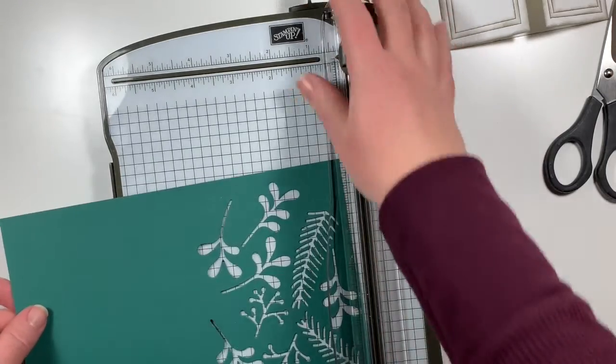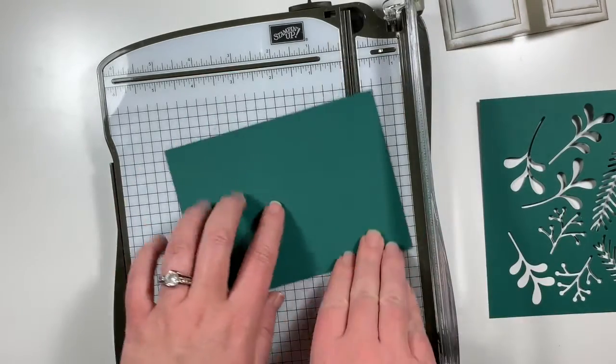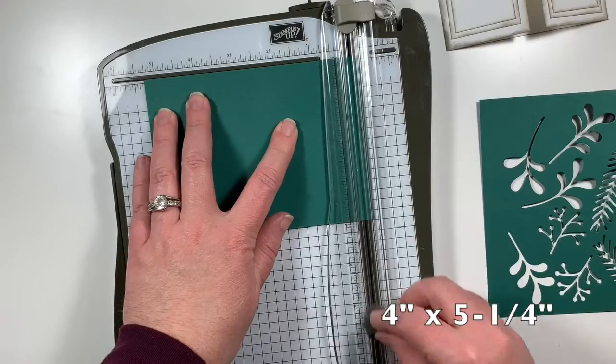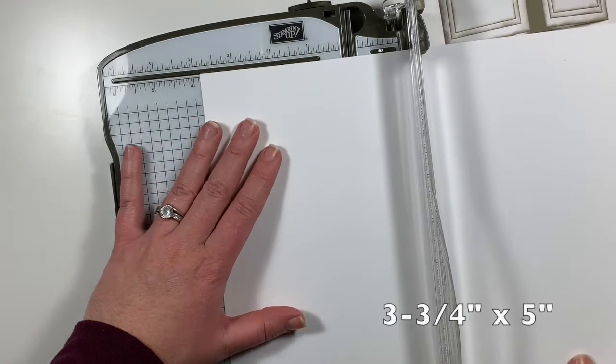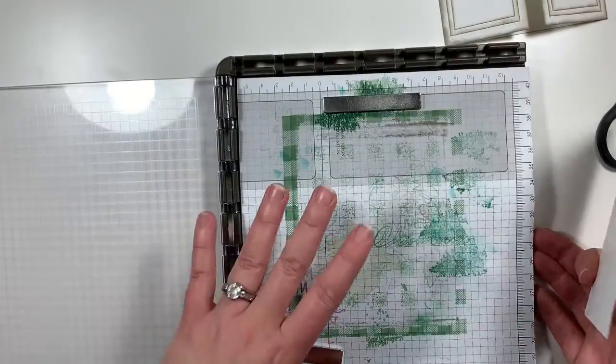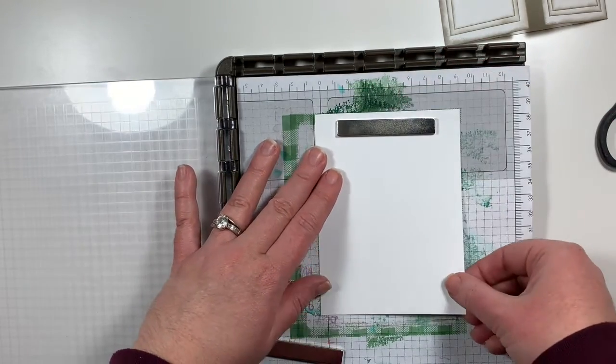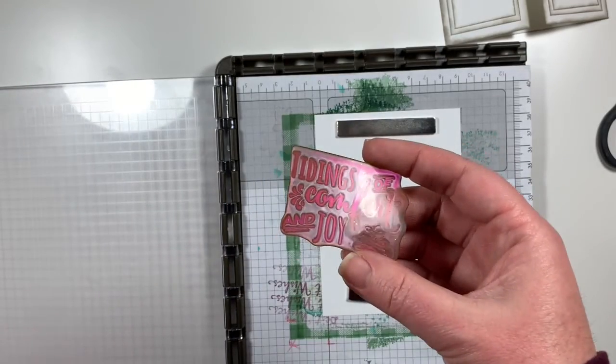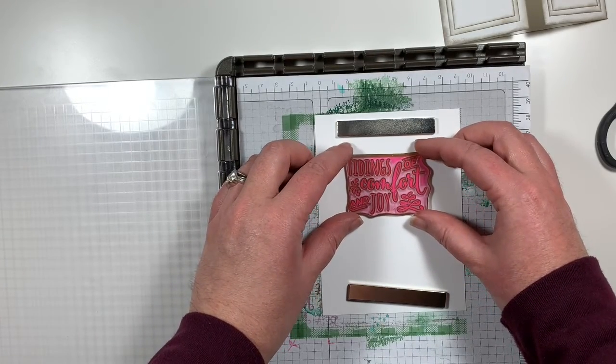And finally to finish it off, I'm going to cut a mat to go inside and then I'm going to cut another mat out of whisper white to layer on top of that. So this is shaded spruce and I'm cutting it at four by five and a quarter. And then I'm going to cut a piece of whisper white at three and three quarter by five. Using the Stamparatus, I'm going to put my whisper white card mat down. I'm going to use my magnets to hold that in place.